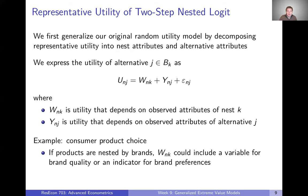To make sense of this, we need to think about the random utility model a bit more. We're going to generalize the original random utility model by decomposing representative utility into two terms: a set of attributes that apply at the nest level, and a set of attributes that apply just at the alternative level. We express the utility of any alternative as W — the representative utility from nest attributes — plus Y, the representative utility from alternative-specific attributes.